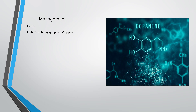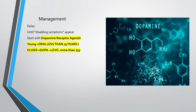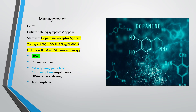For management, treatment is delayed until disabling symptoms appear, then start with dopamine receptor agonists. For people less than 75 years old, treatment should start with dopamine receptor agonists, while for older patients — more than 75 years — start with levodopa. Drug examples include ropinirole, carbegoline, pramipexole, bromocriptine, and apomorphine.